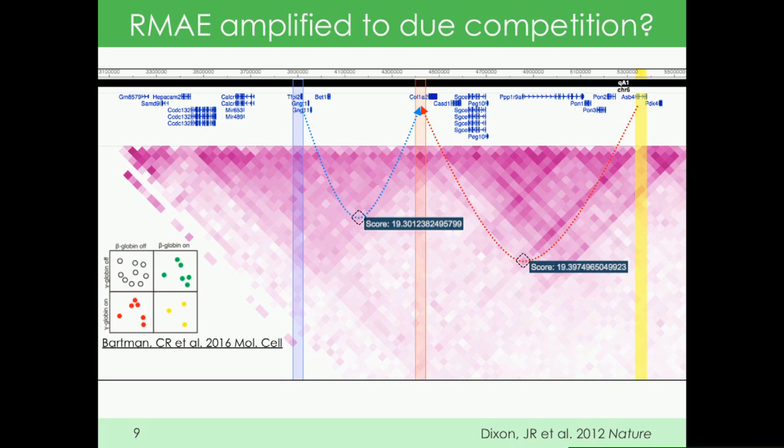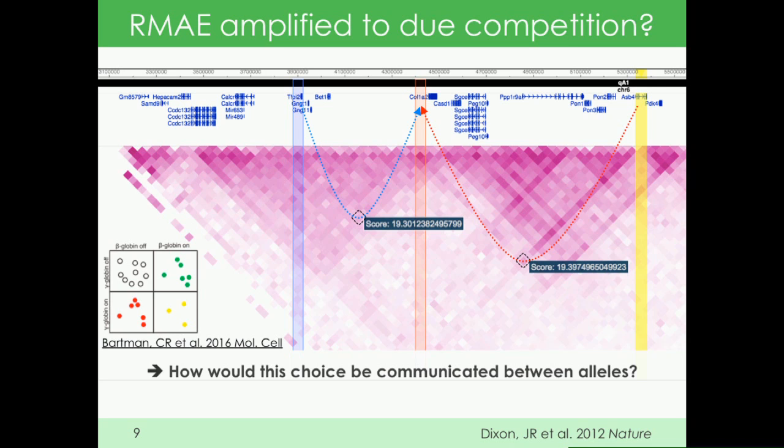We have no idea whether that's true, but there's some evidence from the Gregor lab recently that indeed some enhancers can only work on one gene or promoter at a time. This doesn't explain how that choice would be communicated to the other allele, but we're trying to find similar examples in the genome.